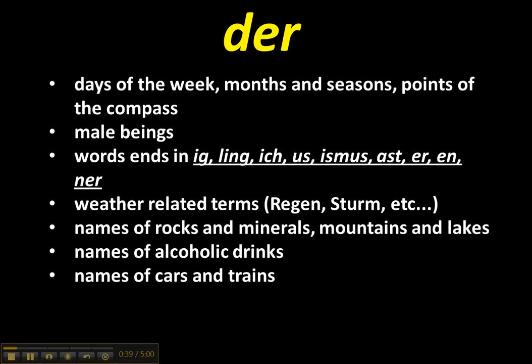The masculine suffixes include: -ich, -ling, -aus, -ist, -mus, -ast, -er, -en, -ner. Most of these will be 'der', not all of them. A lot of weather terms are 'der', but not all. Names of rocks and minerals, mountains and lakes, alcoholic drinks, and names of cars and trains are normally masculine.